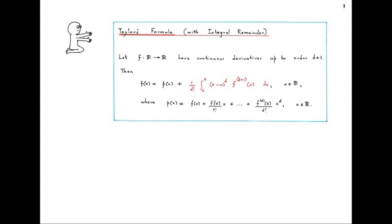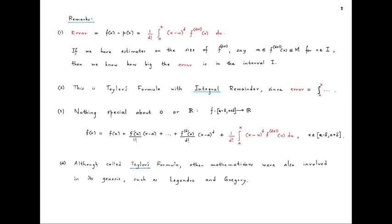Before we see a proof, let's make a few remarks. The error is expressed in terms of an integral involving the (d+1)th derivative of f. If we have estimates on the size of this (d+1)th derivative on some interval — say we know it lies between some numbers m and M — then by substituting these two numbers we would know how big the error is in that interval, and that is one way of practically using Taylor's formula. This is called Taylor's formula with integral remainder because the error is expressed in terms of an integral, but there is a different version where the error is expressed in terms of the (d+1)th derivative evaluated at some point — that is the differential remainder version.